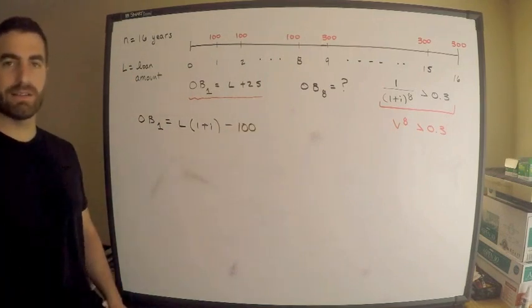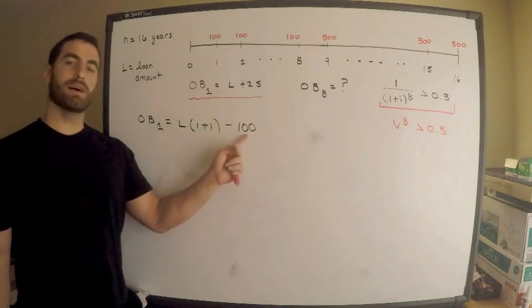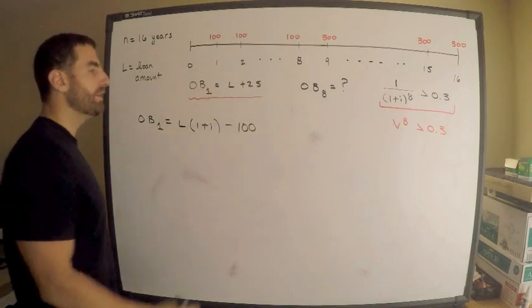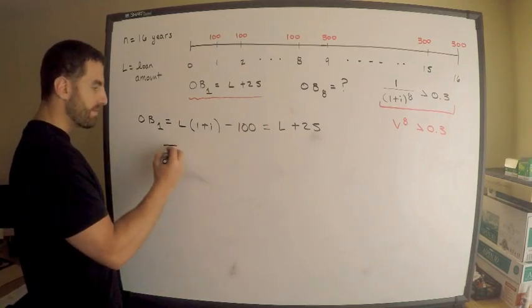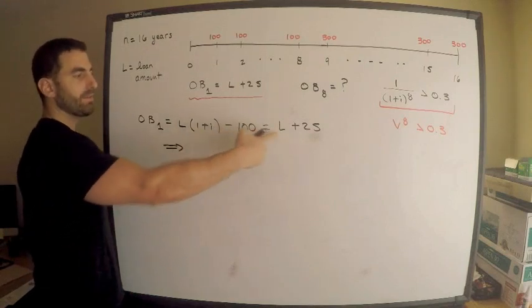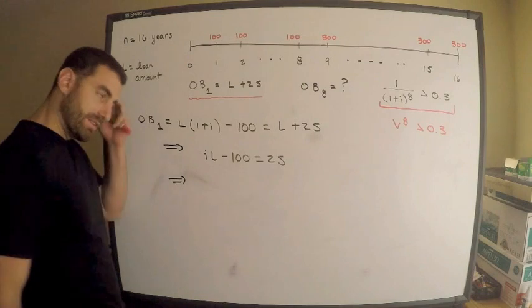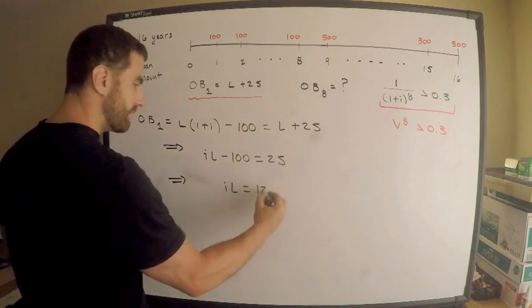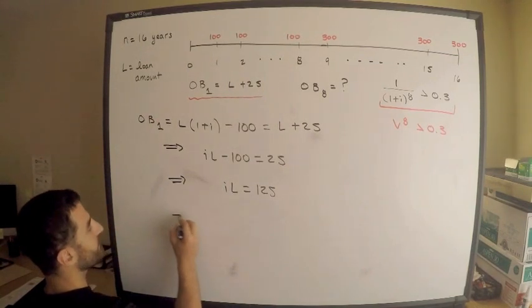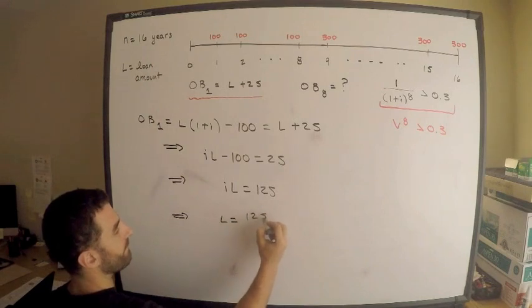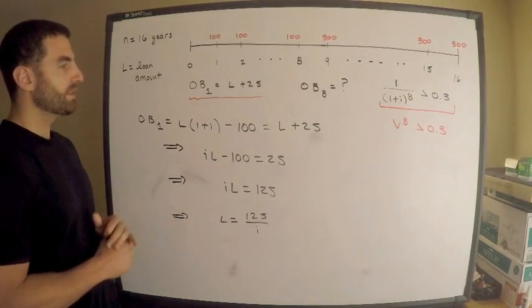We take out the loan, it accumulates for one year at rate i, then we make a payment of $100. This outstanding balance equals L plus 25. So L·(1+i) minus 100 equals L plus 25, which simplifies to iL equals 125, meaning L equals 125 divided by i.